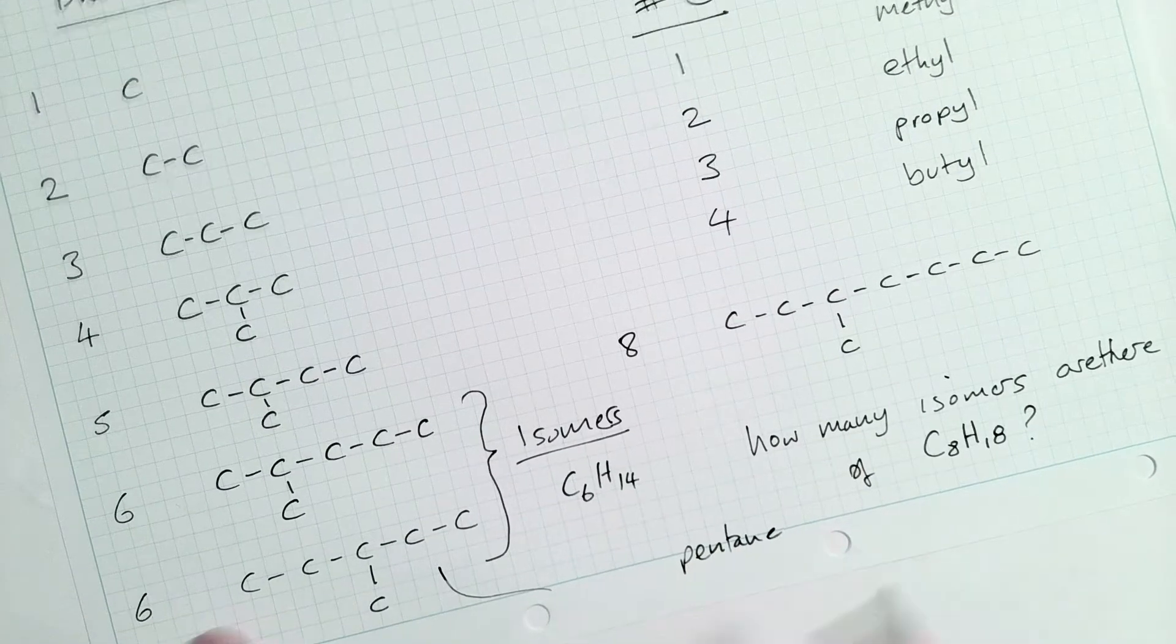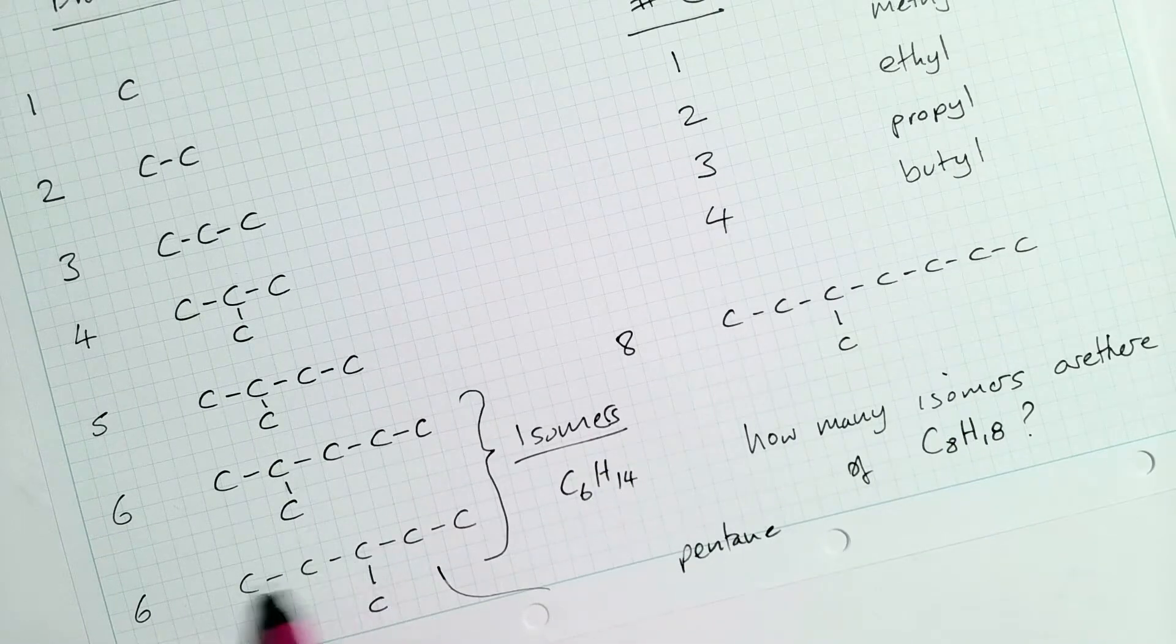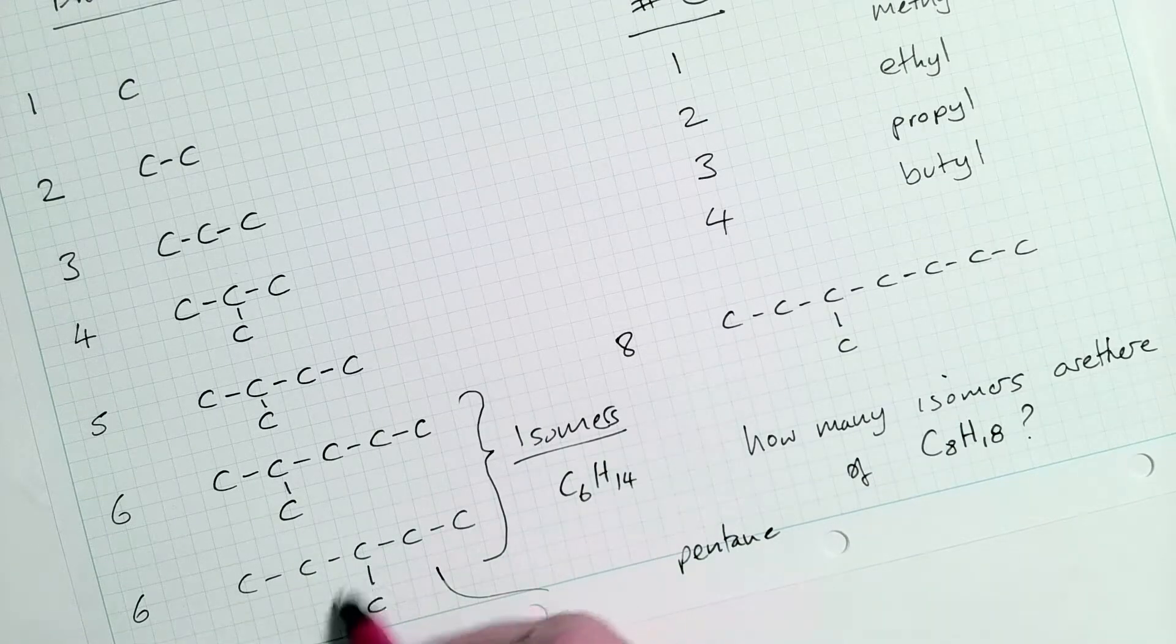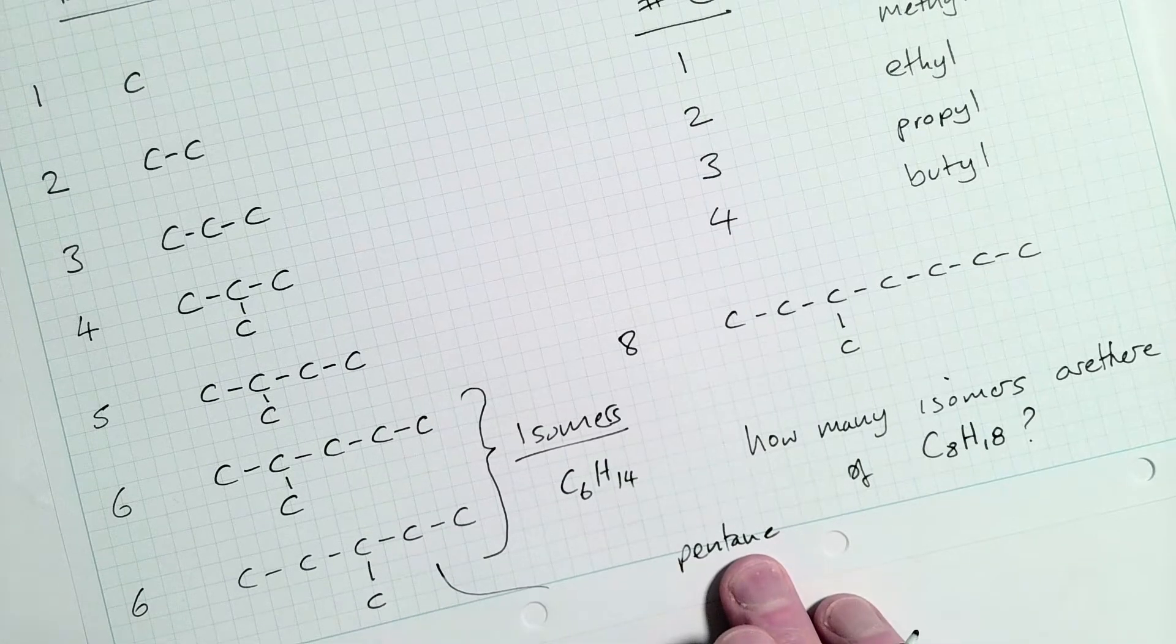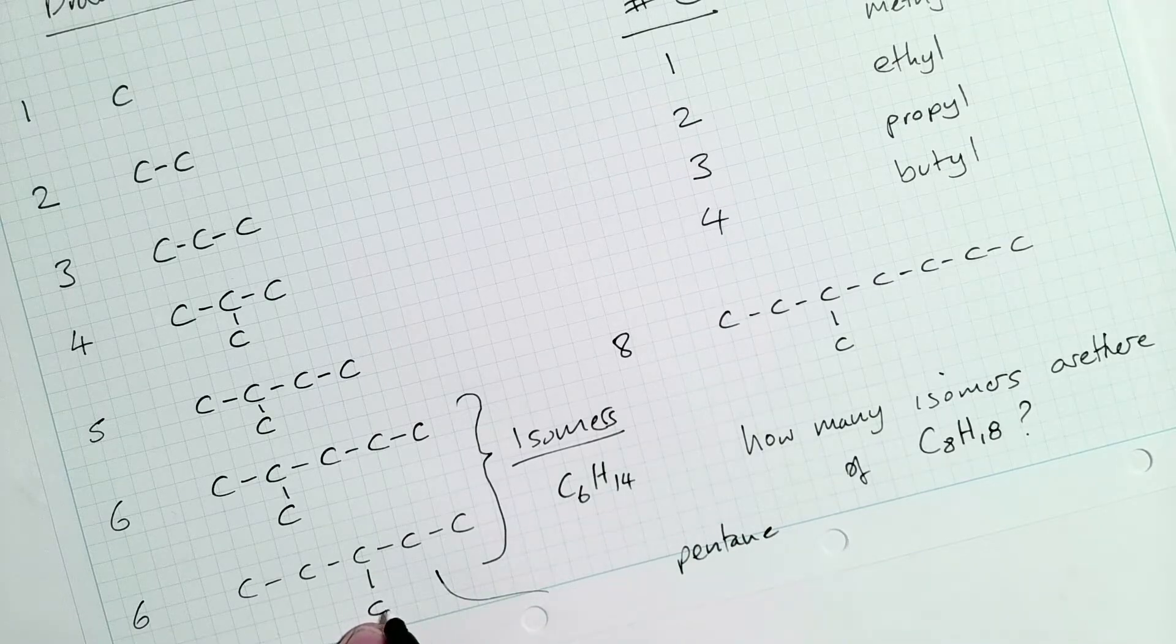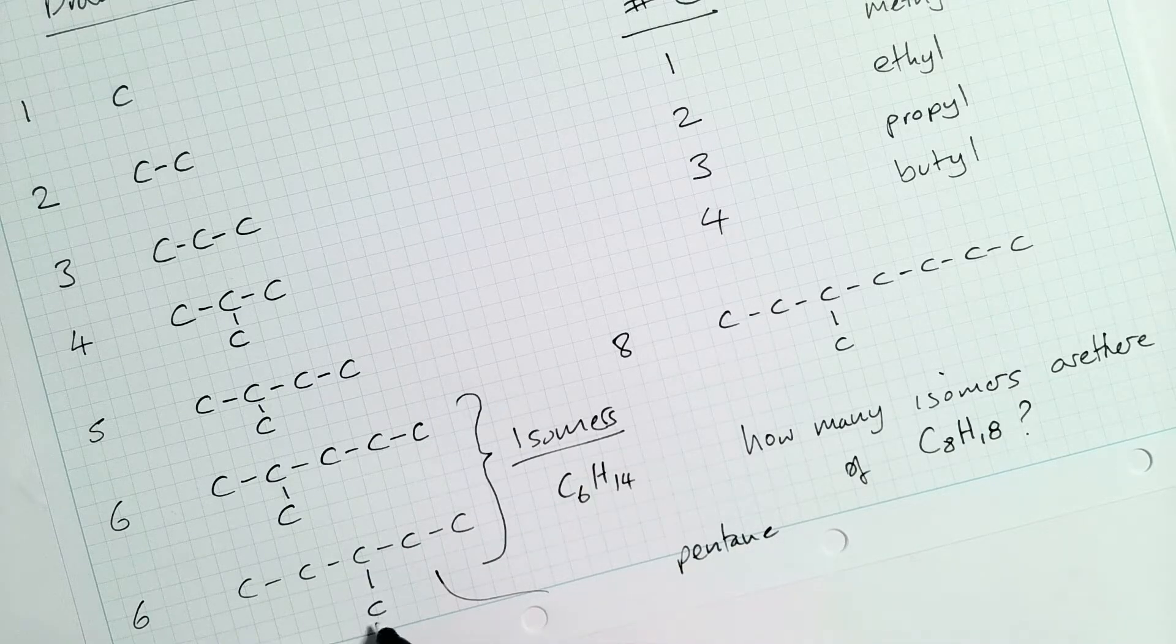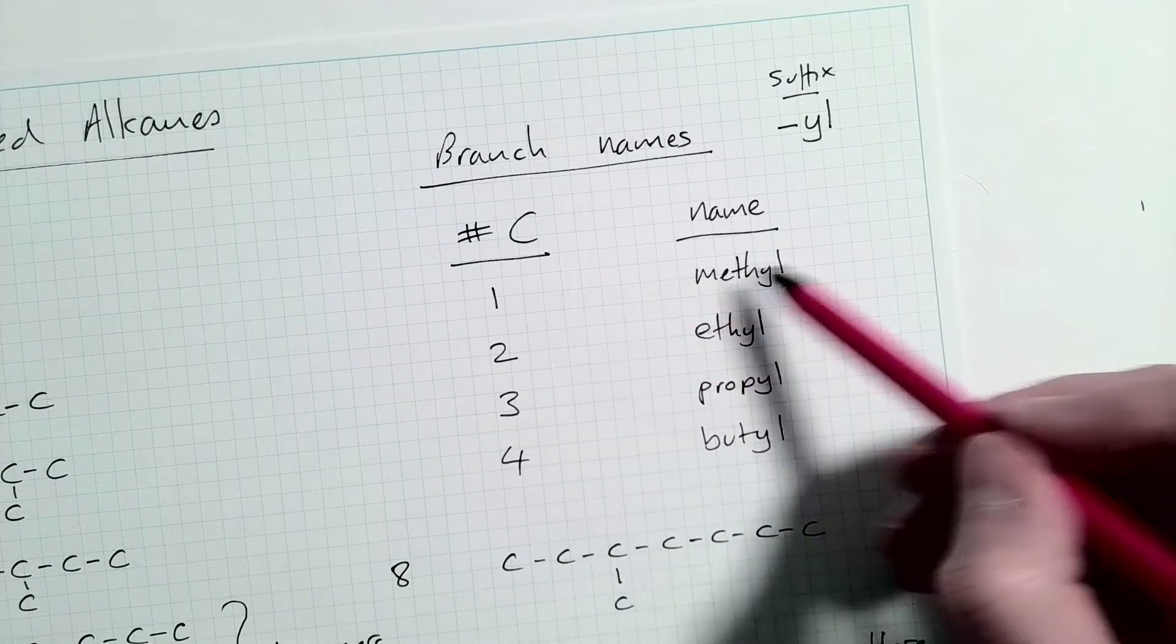So this thing here is going to be called pentane. We take the longest chain of carbons. There's another chain here, but that's only four. There's another chain there. There's only four. So we take the longest chain. That's going to be pentane. And what we do is we refer to this thing ahead of the name of the base molecule.